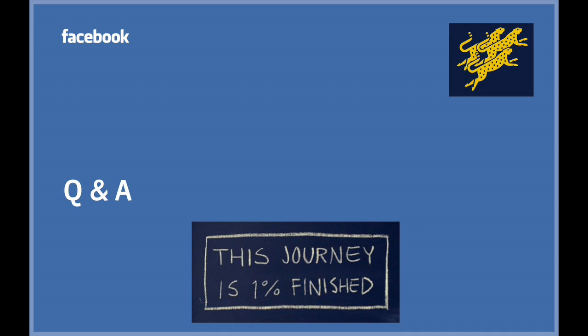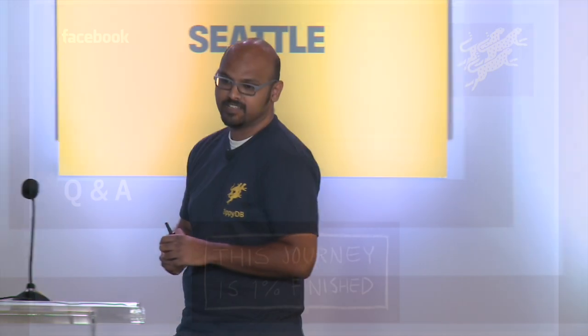Q: Are the followers part of the Paxos quorum? A: No, the followers don't form part of the Paxos quorum — they just asynchronously tail the quorum. As far as client reads are concerned, they can go to a follower or a secondary and get the same set of consistency guarantees, because we replicate the same version established on the primary to the followers.